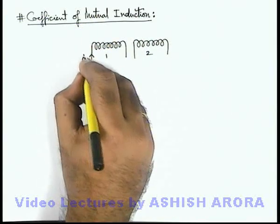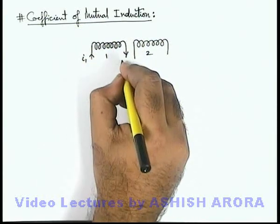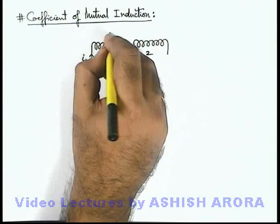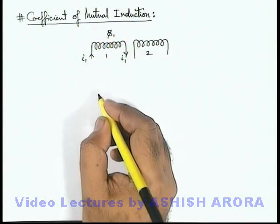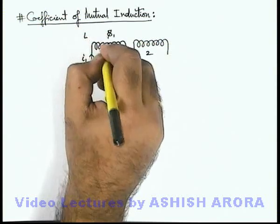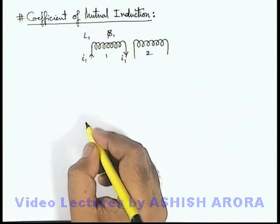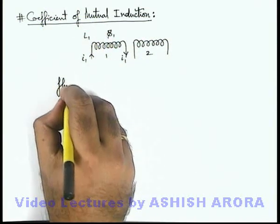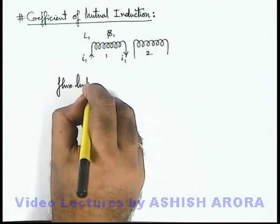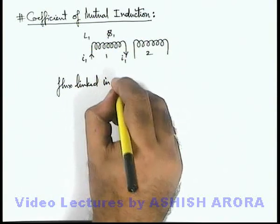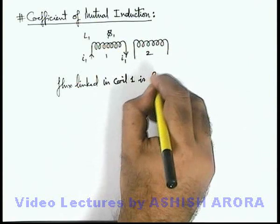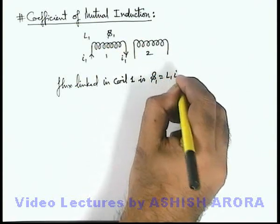If a current i1 flows through the first coil, we know that a magnetic flux phi1 is developed in it. And if the coefficient of self induction of first coil is L1, here we can write flux linked in coil 1 is phi1, we can write as L1 i1.